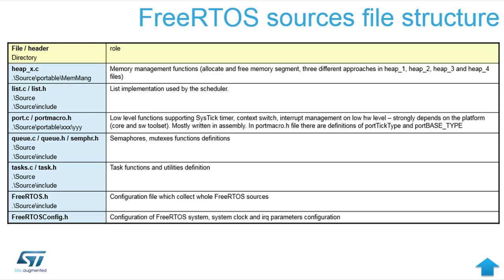Choosing one of the heap files will bring up the functions for allocation and deallocation of memory in the heap, each with different functionality. For example, heap_1 is only static allocation, while heap_5 supports allocation across many different areas — it can allocate in several split parts of the memory.